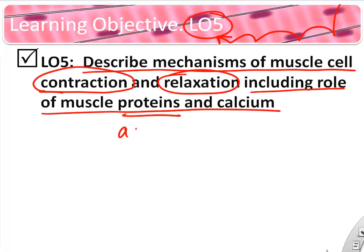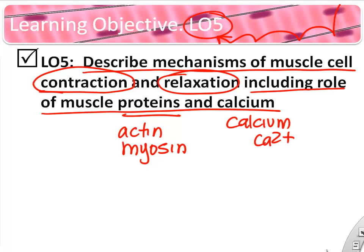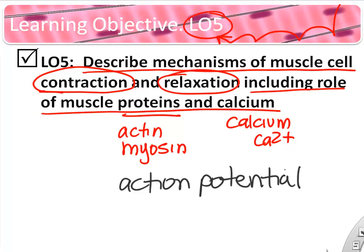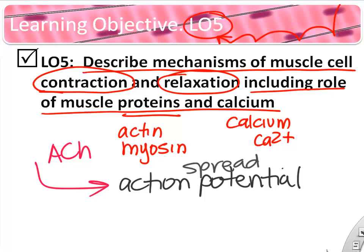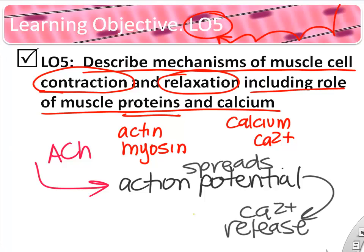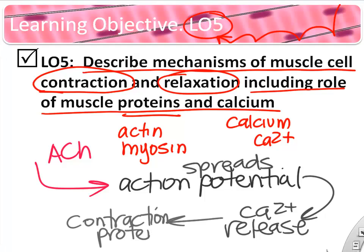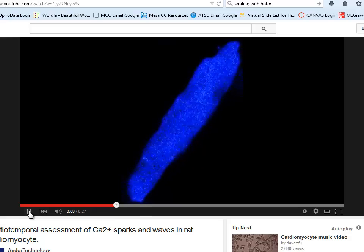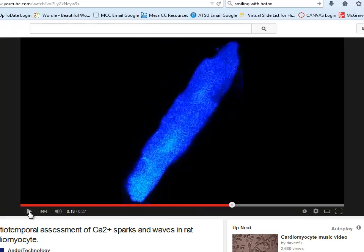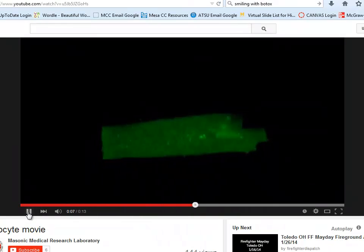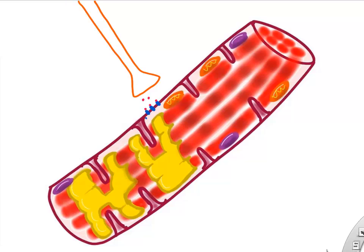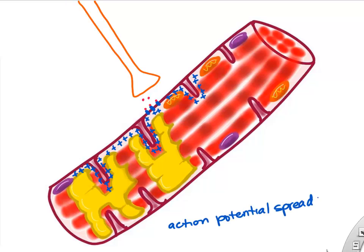Next we describe the mechanisms of muscle cell contraction and relaxation, including the role of muscle proteins and calcium. Acetylcholine triggers an action potential, which triggers calcium release from the SR. Calcium is the bridge between the action potential and contraction — it causes the contractile proteins to interact. This is shown in a cardiac muscle cell with waves of calcium within the cell causing it to contract.